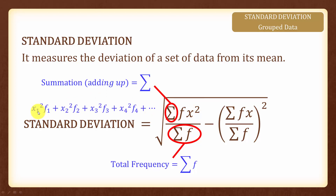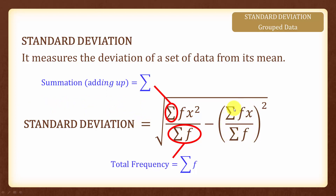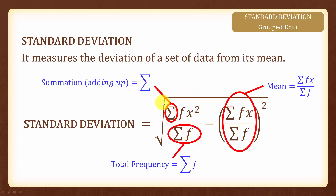We multiply the square of each value of x with its frequency and add them all up. This is somewhat similar to how you find the numerator for mean. The summation of fx over the summation of f is known as the mean. Therefore, the standard deviation will measure the deviation of the data from its mean, giving us a more accurate measure of spread.